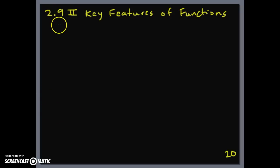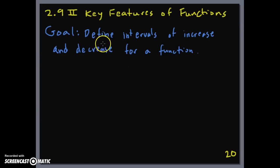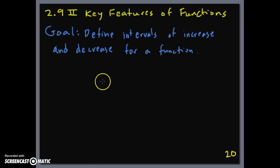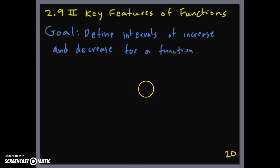Today's lesson is the second part of 2.9, key features of functions. Our goal today is to define intervals of increase and decrease for a function. In the 2.9 first part we used intervals to define the domain and range, and in this lesson we're going to use intervals to state when the line is either increasing or decreasing.